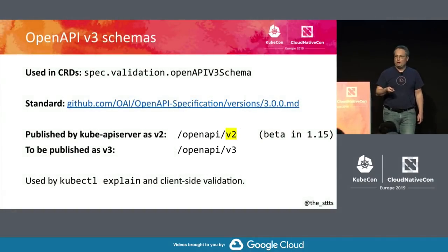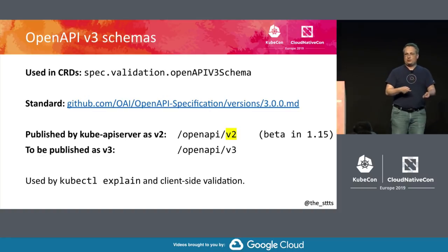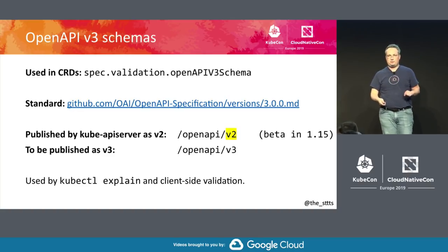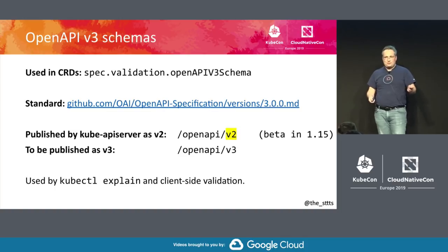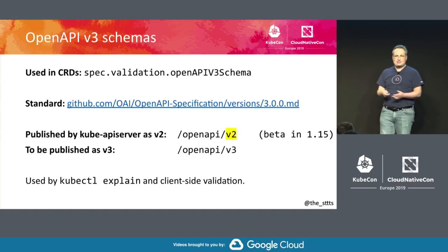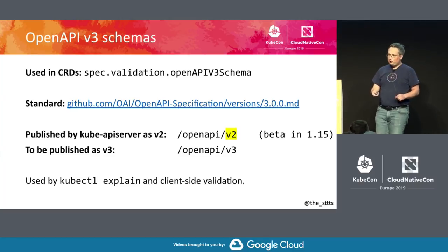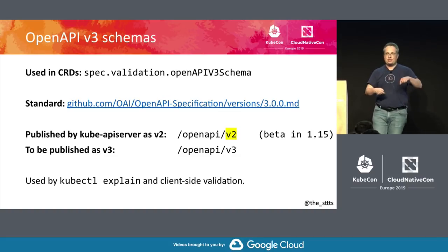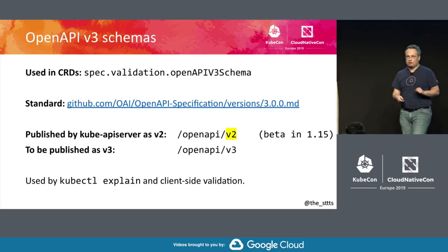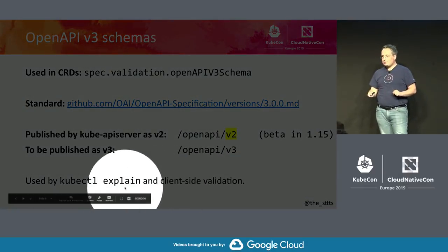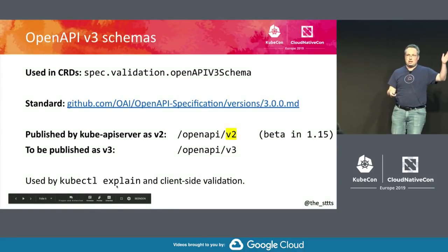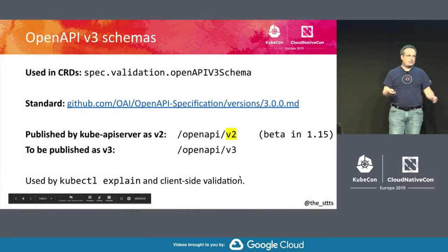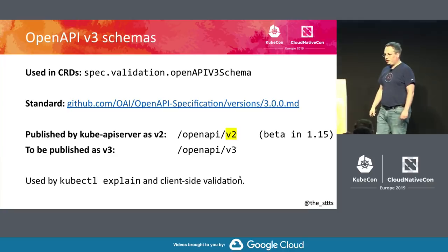kubectl downloads the schema on every request. So if you say kubectl get something using a CRD, it will make a request to the API server and ask for the specification. Previously CRD schemas were not published, but we changed that in 1.15. So in 1.15, we publish OpenAPI schemas from the validation schemas in the spec to kubectl, which means kubectl will explain — you can ask what a CRD looks like, which fields it has — and it will do client-side validation. That's already a step which makes it much more natural compared to native Golang types.